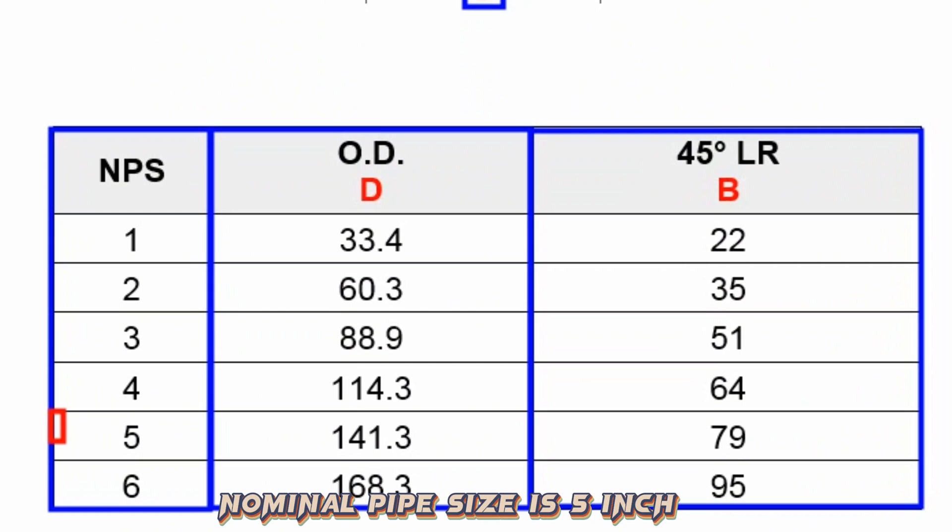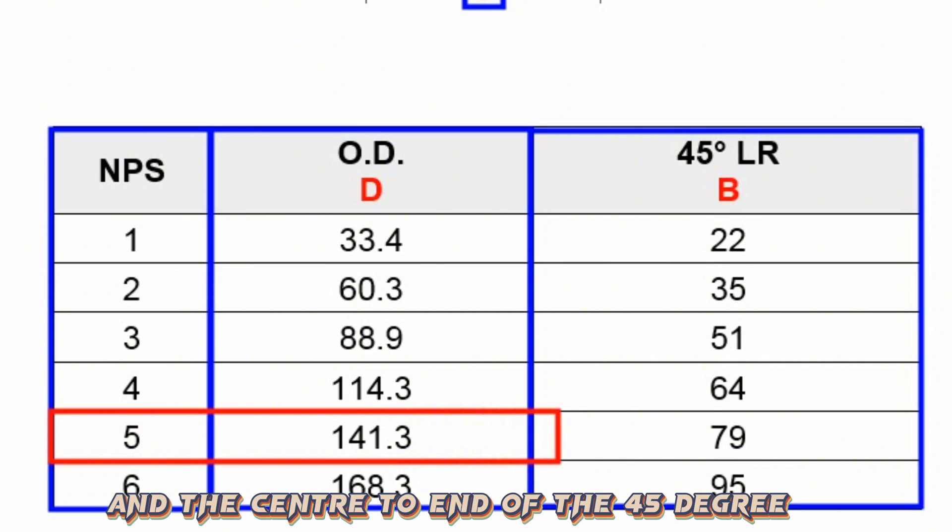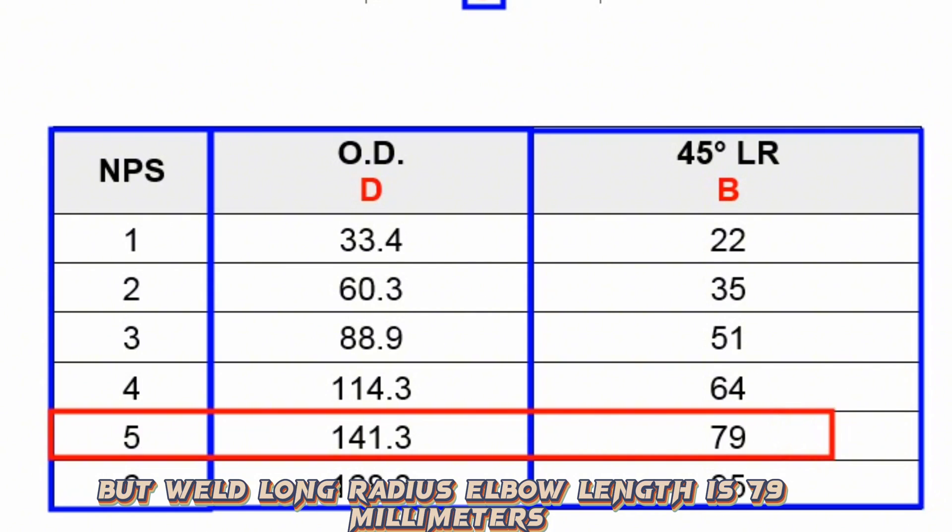We will look to this row, nominal pipe size is 5-inch, outside diameter is 141.3 millimeters, and the center-to-end of the 45-degree butt-weld long radius elbow length is 79 millimeters.